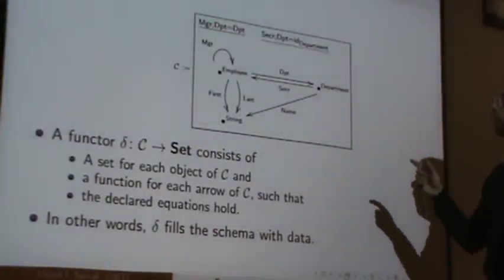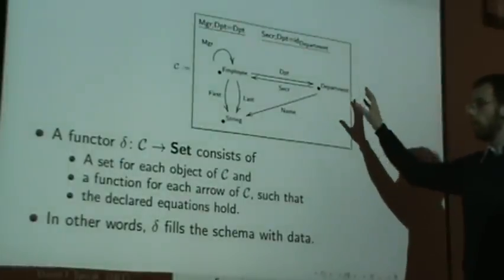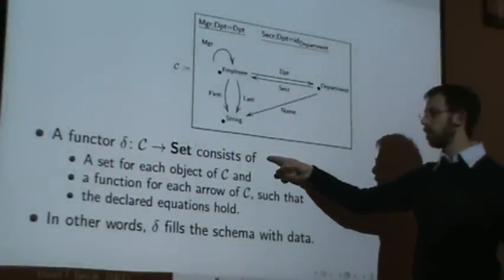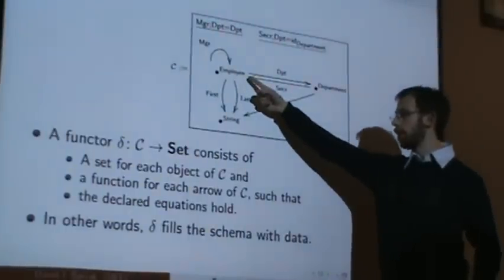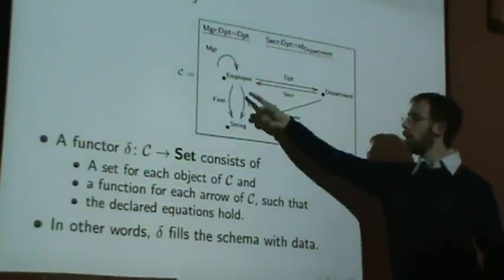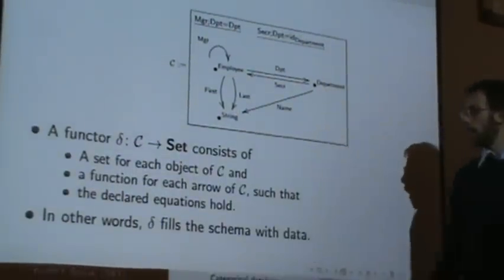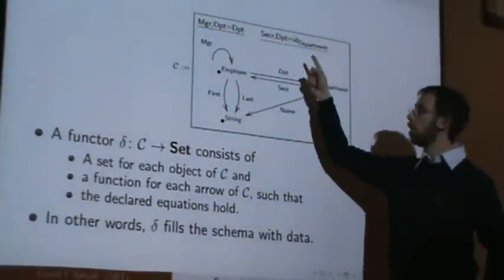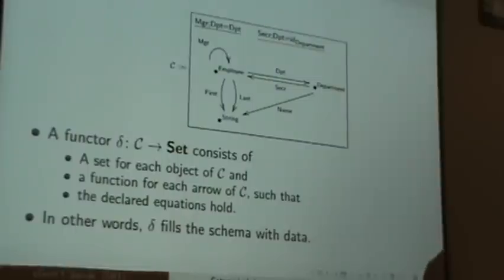The answer is that, suppose we have this category C, then a functor from C to sets consists of - well for every object I'm going to need a set. So I'm going to need a set for this, this and this. For every arrow I'm going to need a function, and for every composition law I'm going to require that those equations hold.